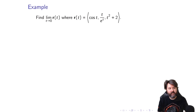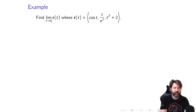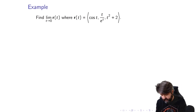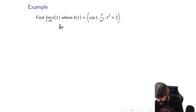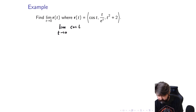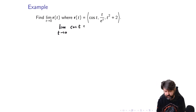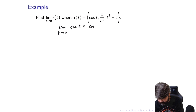Let's find the limit as T approaches 0 of R of T, where R of T has components cosine T, T over e to the T, and T squared plus 2. We can do this component by component. The limit as T approaches 0 of cosine T: cosine is continuous for all real numbers, so it's just cosine of 0, which is 1.